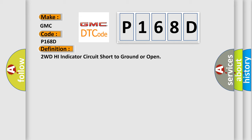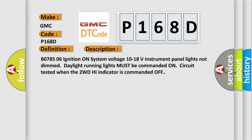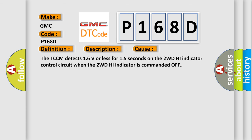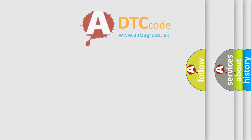Here is a short description of this DTC code. Conditions: ignition on, system voltage 10 to 18 volts, instrument panel lights not dim, daytime running lights must be commanded on, circuit tested when the 2WD high indicator is commanded off. The TCCM detects 16 volts or less for 15 seconds on the 2WD high indicator control circuit when the 2WD high indicator is commanded off. The airbagreset website aims to provide information in 52 languages.